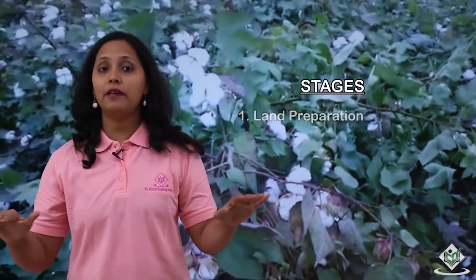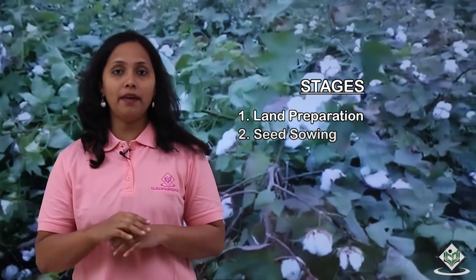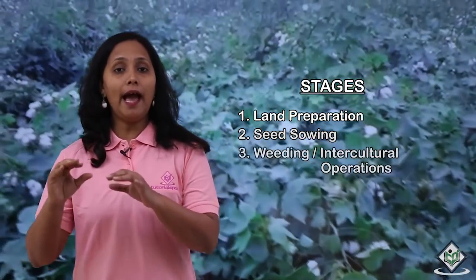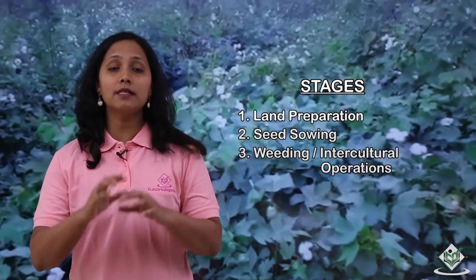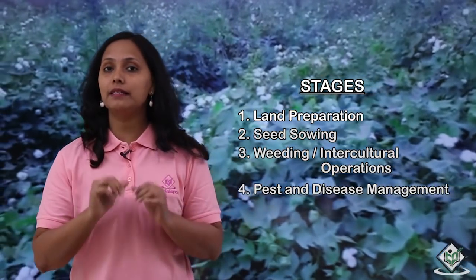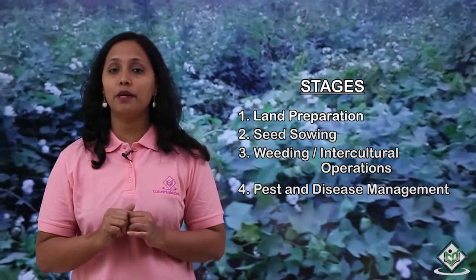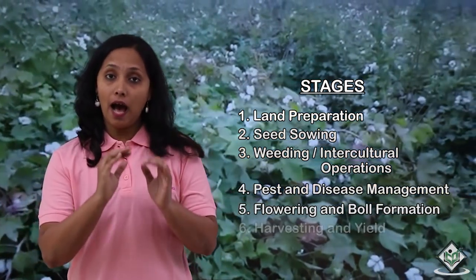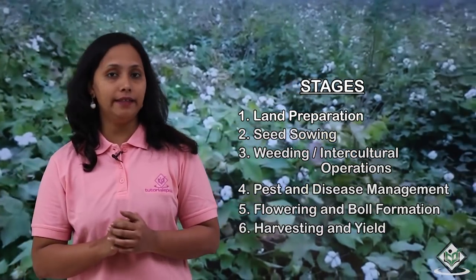Let us now see the stages involved in the cultivation of cotton crop. The stages are: land preparation, seed sowing, weeding and intercultural operations, pest and disease management, flowering and boll formation, and harvesting and yield.